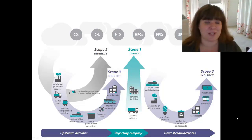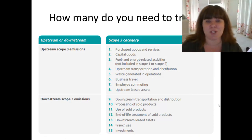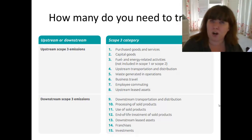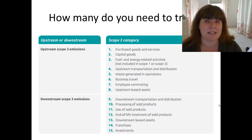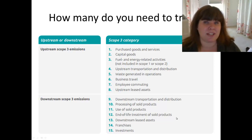There are 15 categories, which makes it a little bit tough. They are divided into two different categories: upstream — what happens before the impact is actually within your operations — and downstream — what happens after your work in your facilities is done with the product or service that you deliver. Depending on your industry or type of organization, the type of emissions you will need to calculate will be different.